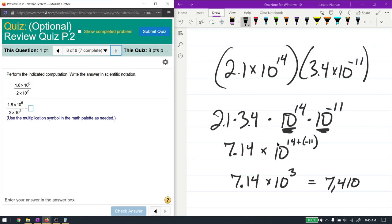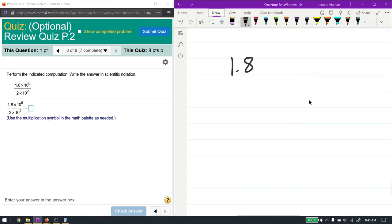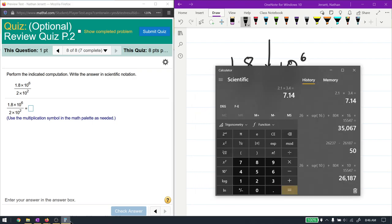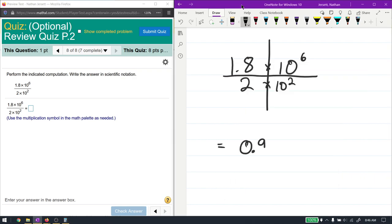Last problem is going to be division of scientific notation here. 1.8 times 10 to the 6. I did that a little better. 2 times 10 to the 2. So this is really just the same process we did last time. We're going to divide the like things, which is kind of right here. 1.8 over 2 and then 10 to the 6 over 10 to the 2. So 1.8 over 2, make sure I read it correctly this time, is 0.9. So we have 0.9. This is going to be times like bases they're dividing is 10 to the 6 minus, or I should say 10 to the 6 minus 2. So 10 to the 6 minus 2, which is 10 to the 4.